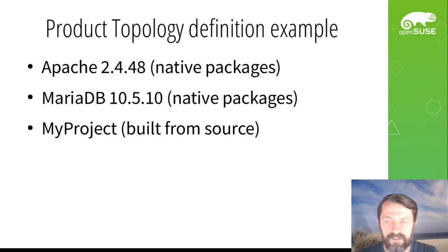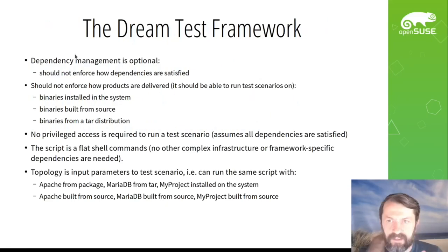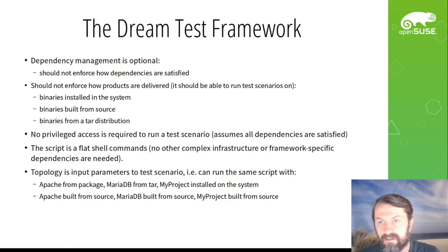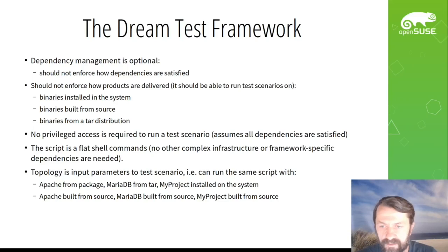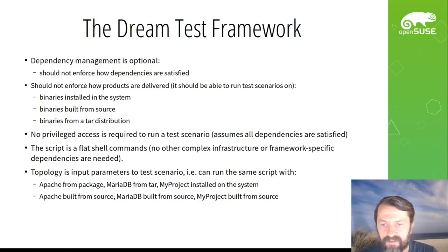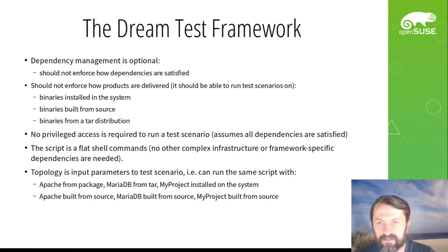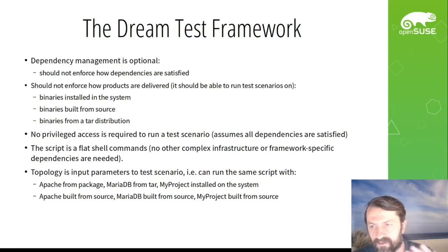Here is one example of a product topology definition. For example, we have an Apache web server at a particular version, a database at a particular version, and some project we are currently working on. We want to run some script scenarios on this topology and see the outcome. Now come the dream framework requirements. I've spent quite a lot of time on integration testing and cross-product communication, and I find that the test framework should not actually care about how dependencies are satisfied — that's a different dimension.